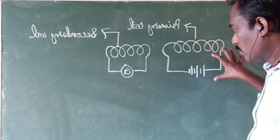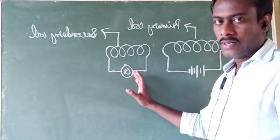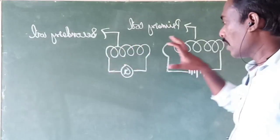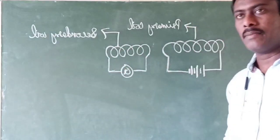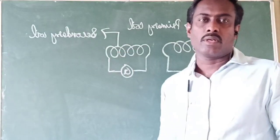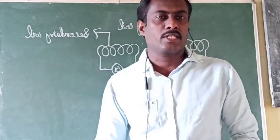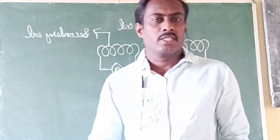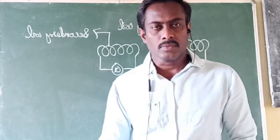The thumb indicates the direction of motion of the conductor, the forefinger indicates the direction of the magnetic field, and the middle finger indicates the direction of the induced current in the circuit. Using this rule we can determine the induced current, the direction of the magnetic field, and the direction of motion of the conductor. Devices working on the principle of electromagnetic induction include electric generators, which are used to produce electric current.